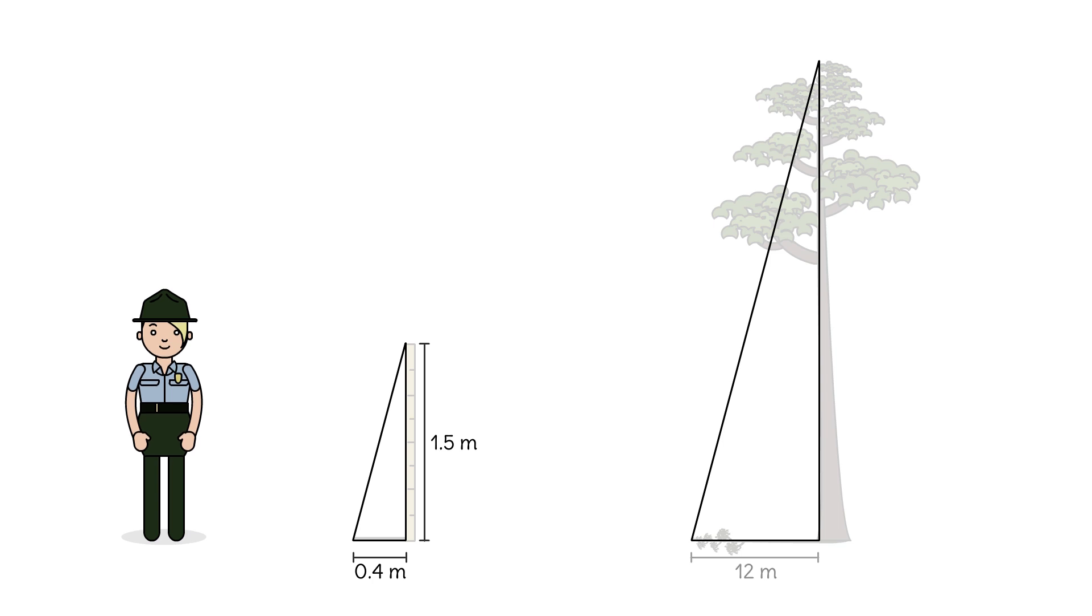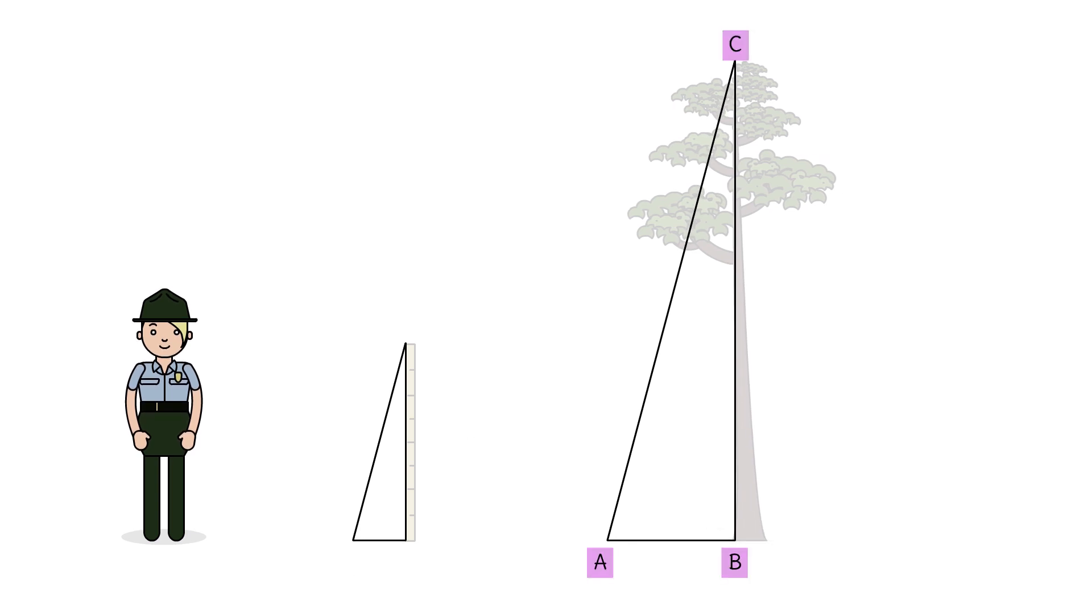Let's first see if triangle ABC is similar to triangle DEF. We know that the tree is perpendicular to the ground. That means angle B is a right angle. And Macy stuck her stick in the ground at a right angle as well, so angle E is right.